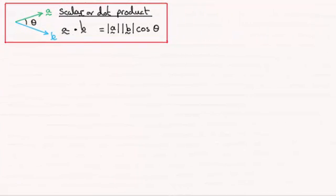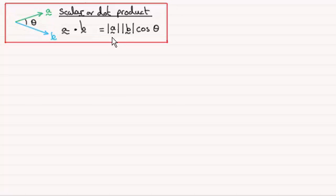Hi there. In the past we've discussed the scalar or dot product between two vectors a and b, inclined at an angle theta to one another. Remember, a dot b was defined as the magnitude of a times the magnitude of b times the cosine of the angle theta. We used this to find the angle between two vectors and also to find the scalar product form for the equation of a plane.